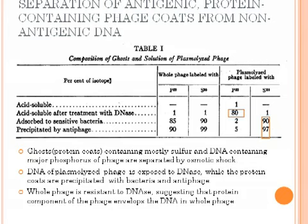Hershey and Chase leveraged the bacteriophage system to demonstrate their findings. Table 1 shows that whole phage labeled with either radioactive phosphorus, which only labels DNA, or radioactive sulfur, which only labels protein, can be separated by osmotic shock. However, when phage is adsorbed to sensitive bacteria, both protein and DNA can be recovered from the precipitate. This finding suggests that during the course of infection, DNA remains protected either by the bacterial membranes, the protein coat of the phage, or both.